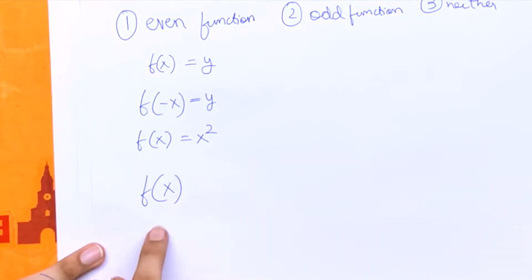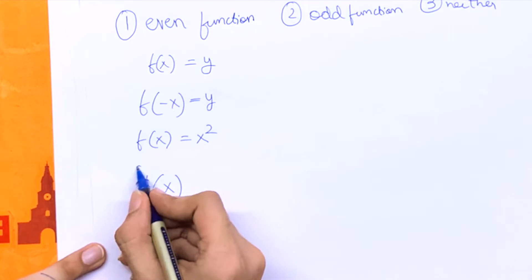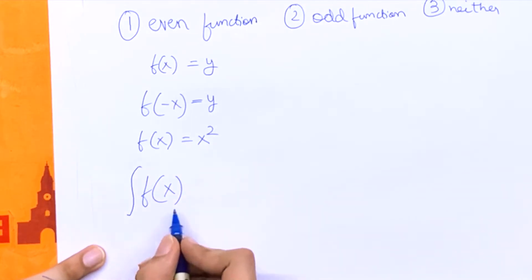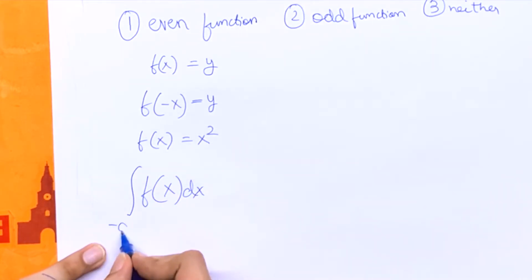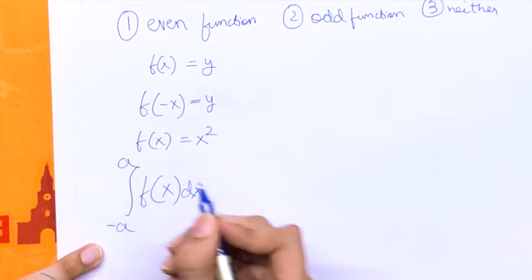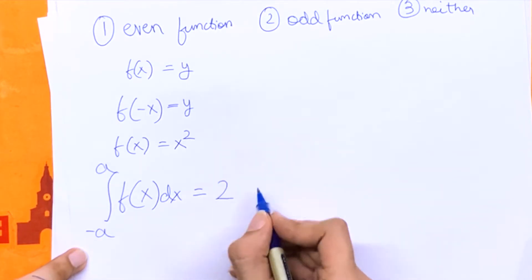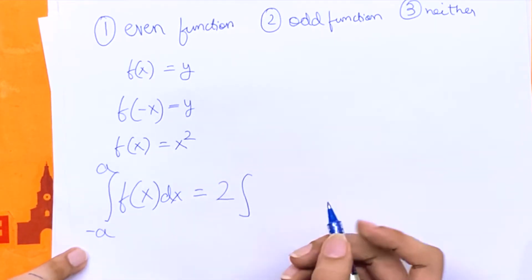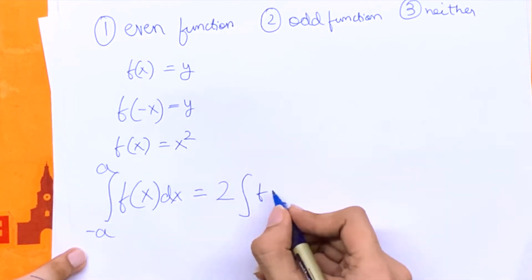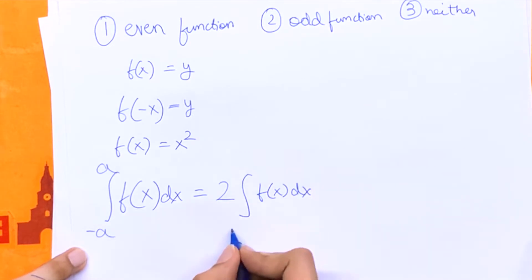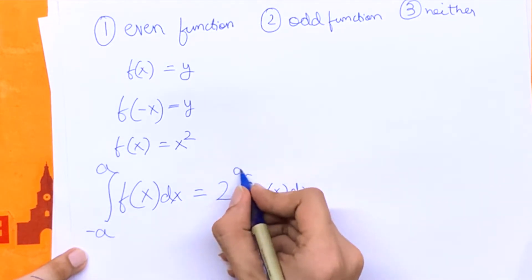Now let f be any even function. If you want to integrate f(x) dx from minus a to a, we can write that as two times the integral of f(x) dx from 0 to a.